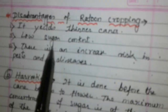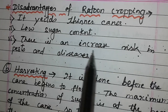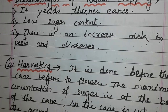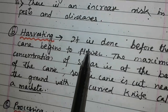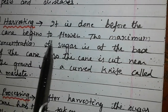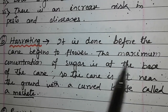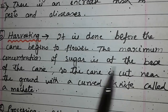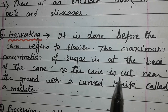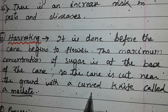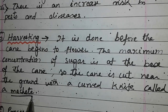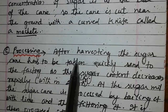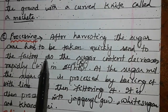Harvesting is done before the cane begins to flower. The maximum concentration of sugar is at the base of the cane, so the cane is cut near the ground with a curved knife called a machete.